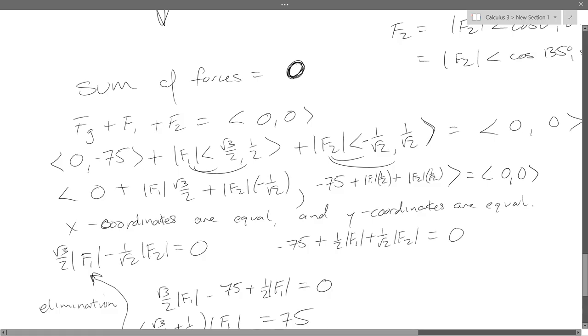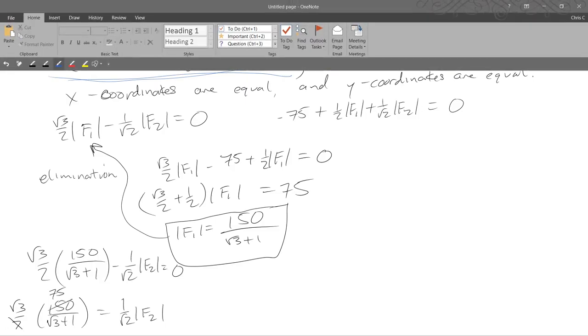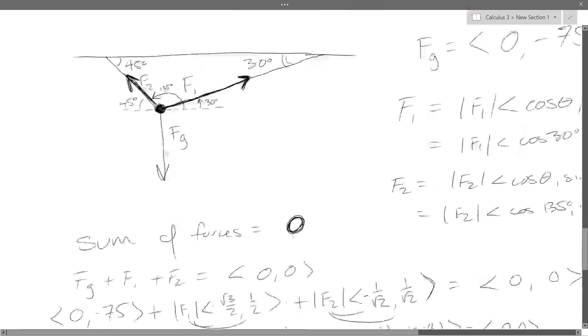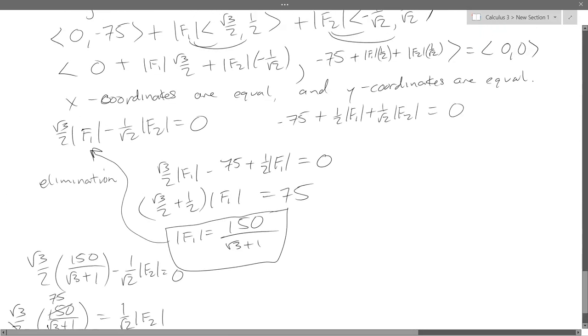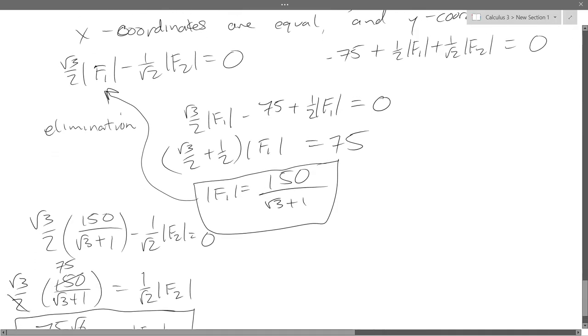And we just add all three of those vectors up. We want to get zero, zero, so the static equilibrium is actually static. Adding the x coordinates together, we have zero plus F1 square root 3 over 2 plus F2 negative 1 over square root 2. Do the same thing for the three y-coordinates. So you really have two equations, an x equation and a y equation.